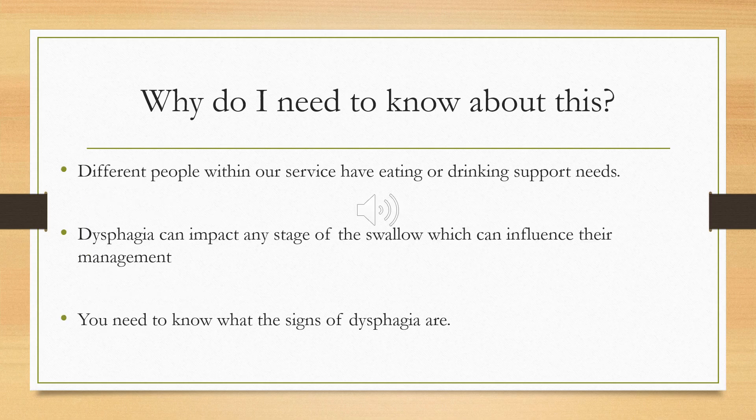So why is it important that you do this training and know about this? Many people within our service have eating or drinking support needs and the support needs a person might have can vary. Some examples would be somebody might have a physical disability, so you might need to physically support a person to get access to food or fluid, or it might be because they have difficulties at the mouth, during the swallow, or within the stomach stage — and this could be caused by many different factors. This terminology will be beneficial for you for the rest of the training and within your day-to-day practice.